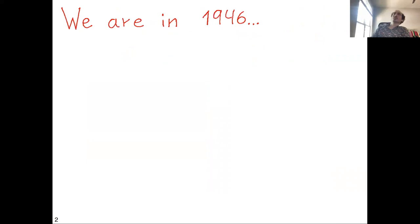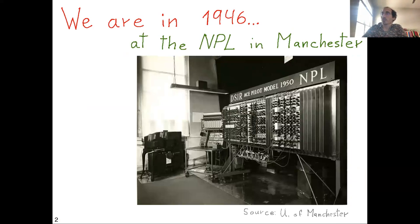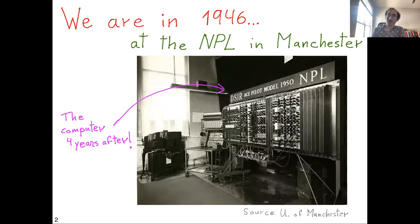In this story, we are in 1946 at the National Physics Laboratory, which is around Manchester. This is the kind of computers they had at the time — this is actually a later, improved version of what they had. So this is not exactly the computer, but a better version from shortly after.